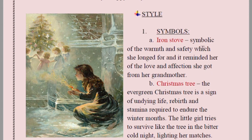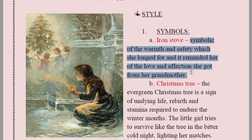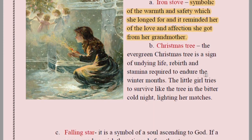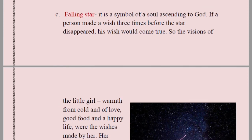Symbols: Iron stove — symbolic of the warmth and safety she longed for, reminding her of the love and affection she got from her grandmother. Christmas tree — the evergreen Christmas tree is a sign of undying life, rebirth, stamina, and endurance. Even in winter months the Christmas tree keeps its leaves intact. It is a symbol for the little girl who tries to survive the bitter cold, just like the tree.